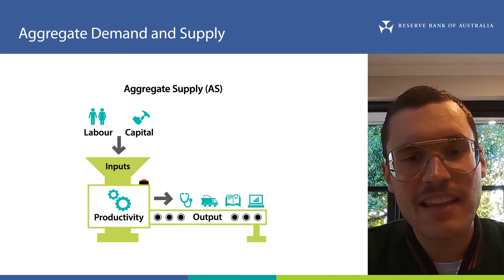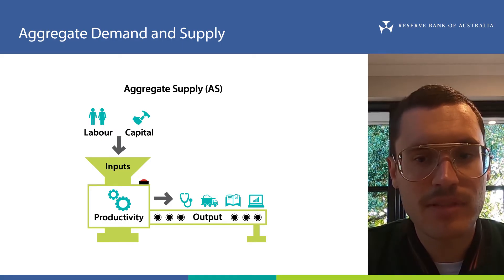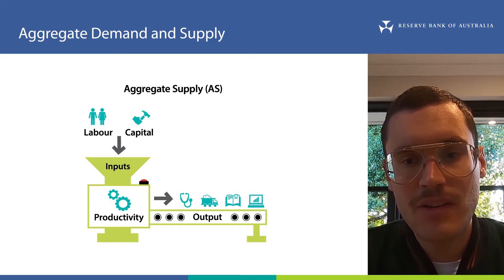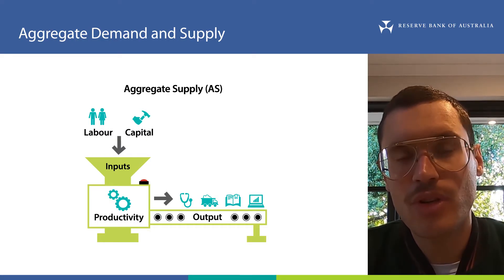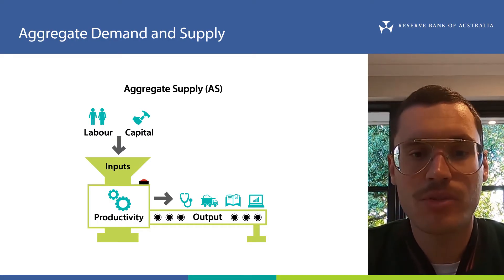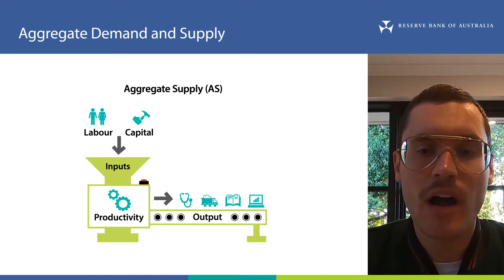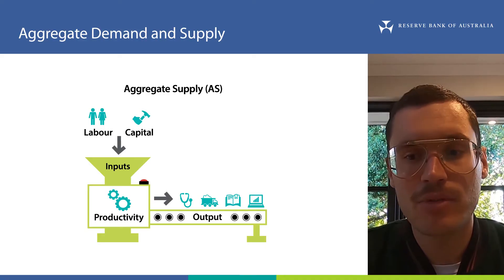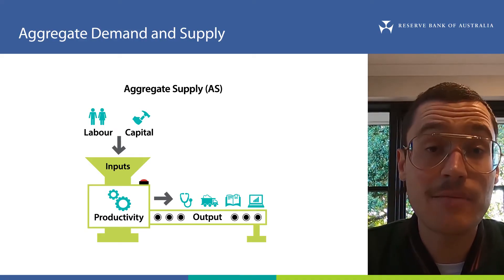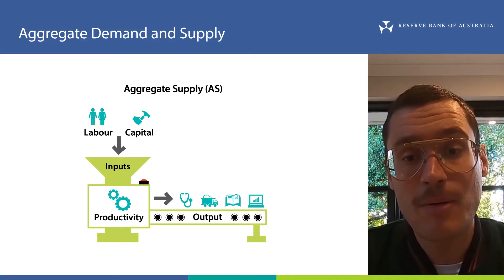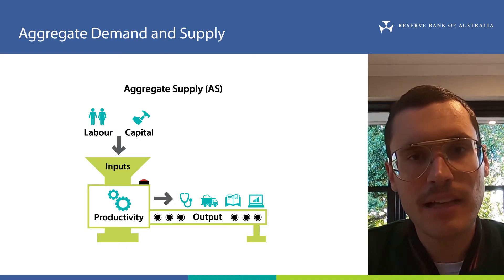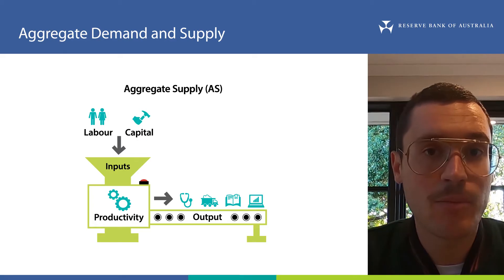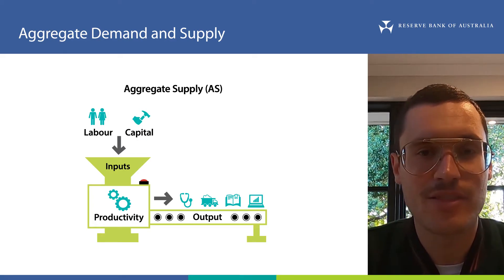Think of productivity like this: labour and capital inputs are used to produce a good or service, which is an output. Productivity determines how much output you can get from a given amount of inputs. All else equal, higher productivity means more output from the same inputs, or fewer inputs required to produce the same output. If you want to learn more, there's an explainer on productivity linked in the description.